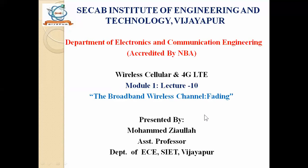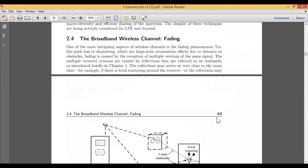In the broadband wireless channel, fading is caused by different multipath losses. There is a possibility that we may encounter some kind of losses — those types of losses are due to the fading effect. Fading is one type of mechanism, or you can say a phenomenon, just like path loss or the shadowing effect that we have seen previously. When it comes to large-scale attenuation due to very large distances or some obstacles, the fading is caused by the reception of multiple versions of the same signal.